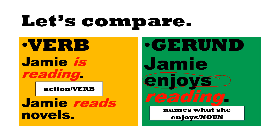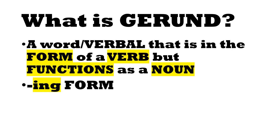So there are only two things to remember about gerunds. First, it's a word or verbal that is in the form of a verb but functions as a noun. And second, it's in the ING form of the verb. So we have reading, singing, acting, flying, walking, running, and so on.